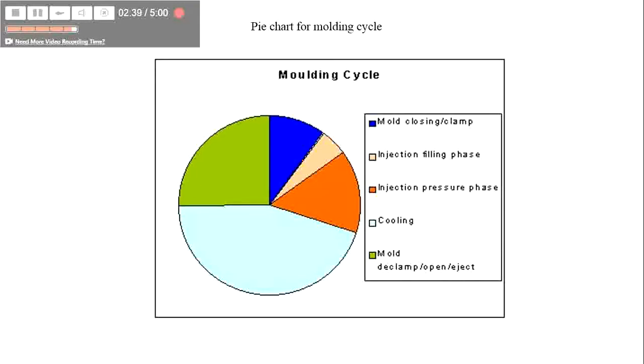As you can see from this pie chart, cooling time takes the maximum amount, nearly 42 to 43% of the cycle time.